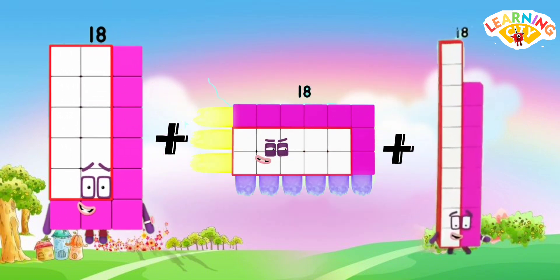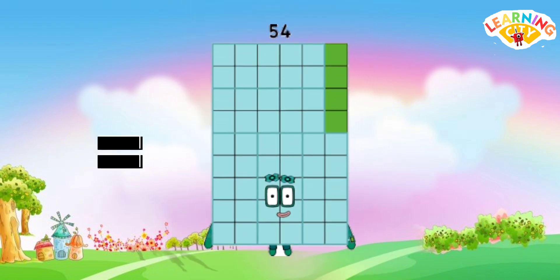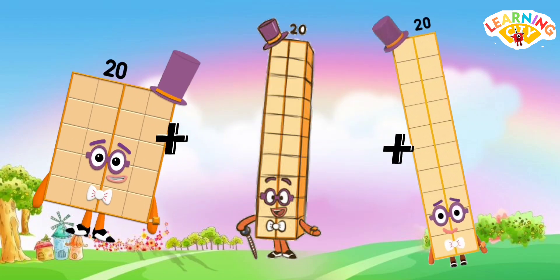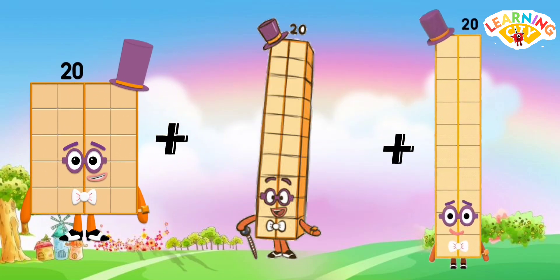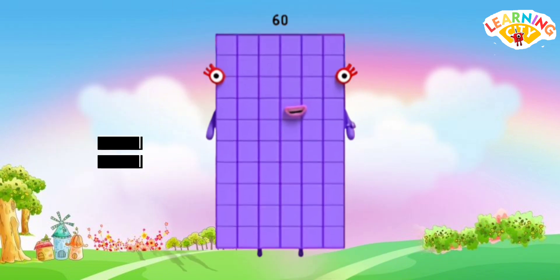18 plus 18 plus 18 equals 54. 20 plus 20 plus 20 equals 60.